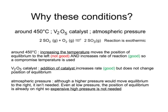To recap, the conditions are a temperature of around 450 degrees, a catalyst of vanadium five oxide, and atmospheric pressure. Here is the reversible reaction: sulfur dioxide and oxygen making sulfur trioxide — all gases. The forward reaction, left to right, is exothermic, and that means the reaction going from right to left is endothermic and requires heat.